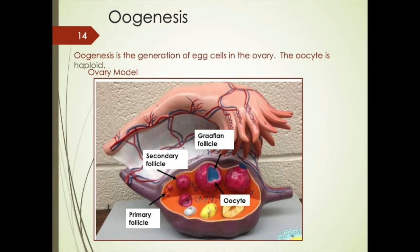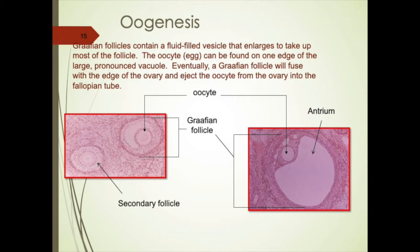Oogenesis is the creation of the eggs. The oocyte is haploid. 'Oo' means egg and 'cyte' means cell — so the egg cell. This is another slide that is in lab. Graafian follicles contain fluid-filled vesicles that enlarge to take up most of the follicle, and you can see the oocyte in the picture. It can be found on one edge of the large pronounced vacuole. Eventually, the follicle will fuse to the edge of the ovary and eject the oocyte into the fallopian tube.